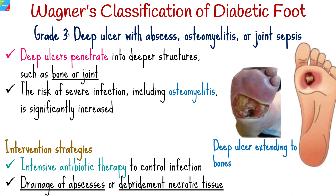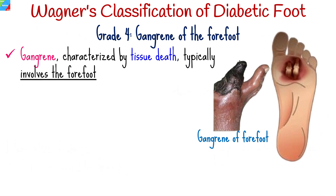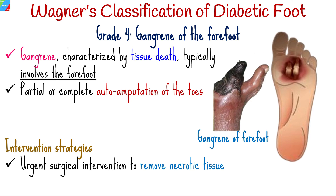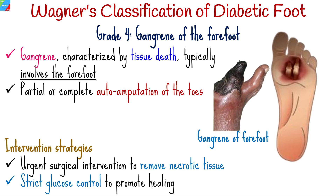Grade 4: Gangrene, characterized by tissue death, typically involves the forefoot. Partial or complete auto-amputation of the toes may occur. Intervention strategies include urgent surgical intervention to remove necrotic tissue, strict glucose control to promote healing, and continued monitoring for signs of systemic complications.